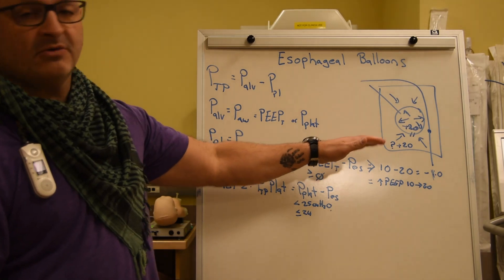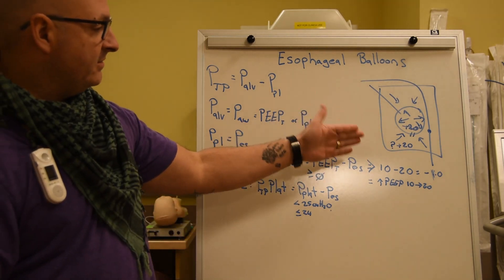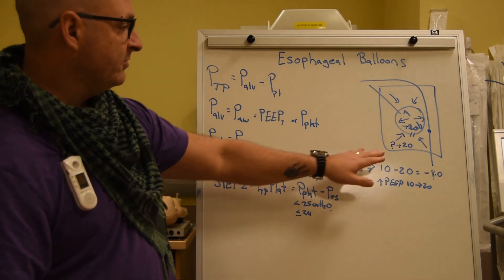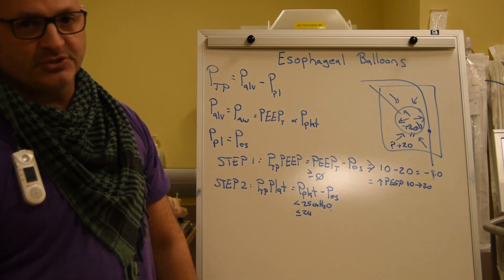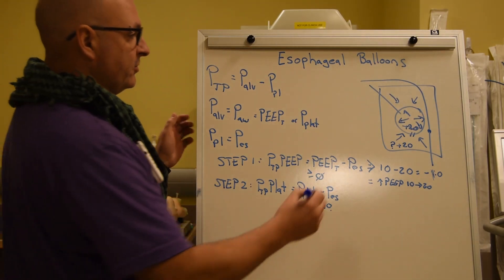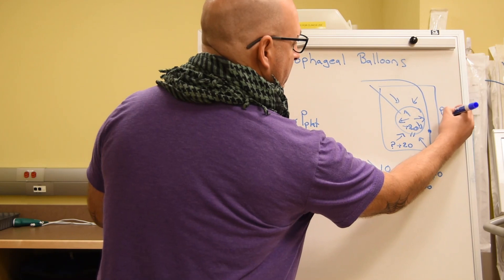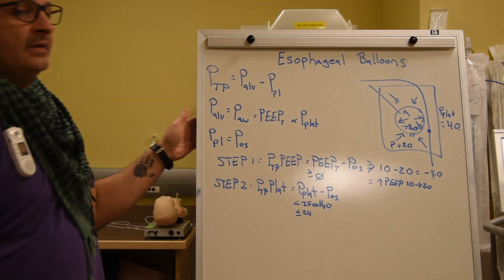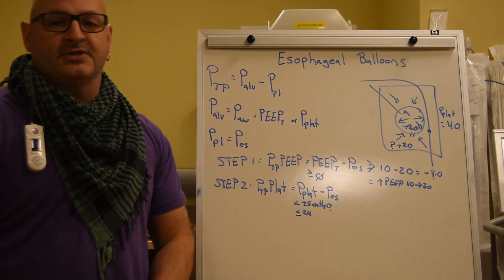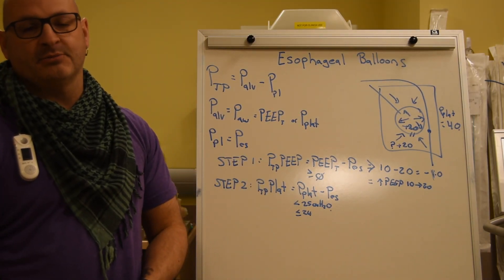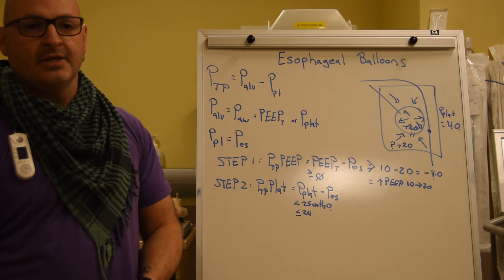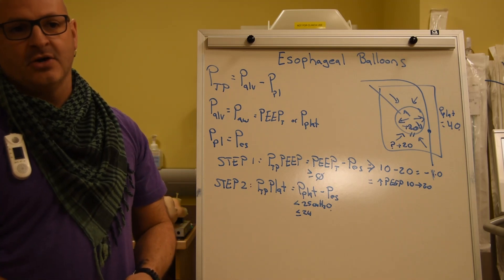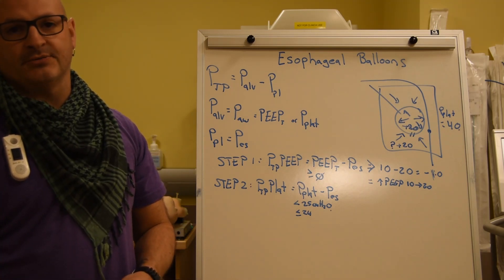If we have our patient here, and we've identified our esophageal pressure is already 20, but now we do a plateau measurement and we get a value of 40. Any RT worth their salt would know that a plateau pressure of 40 is something pretty astronomical. Most of the time, we would always target to be less than 30, or else we know we're going to be dealing with troubles down the road.